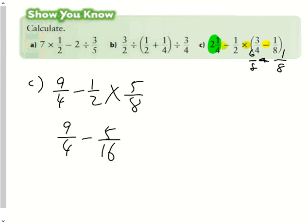So after I do my multiplication, I have 9 quarters, take away 5 sixteenths. And now that I have subtraction, I'm going to use my common denominator of 16. It's the first multiple of both fractions share. I multiply it by 4, I multiply it by 4, I get 36 sixteenths. Take away 5 sixteenths.